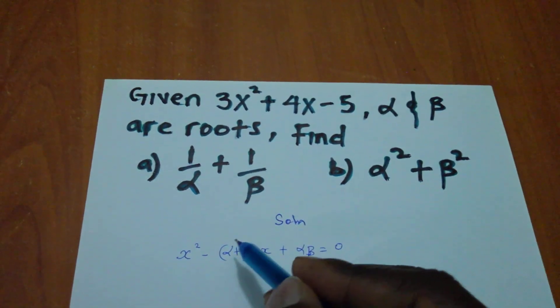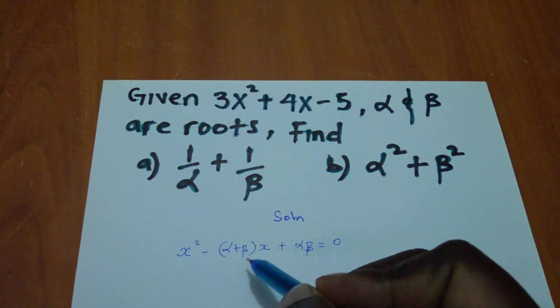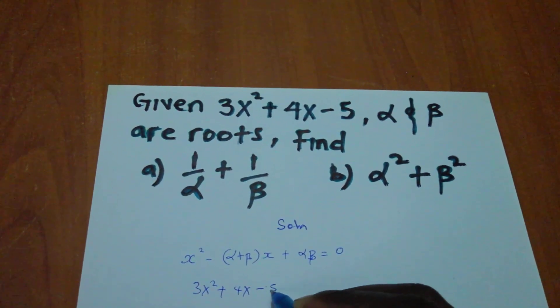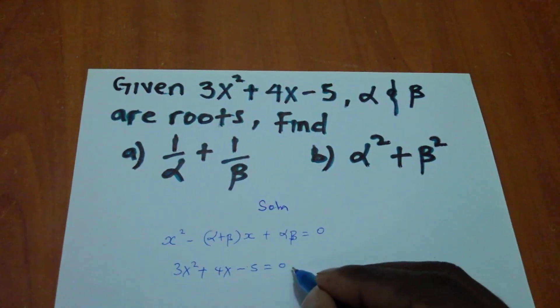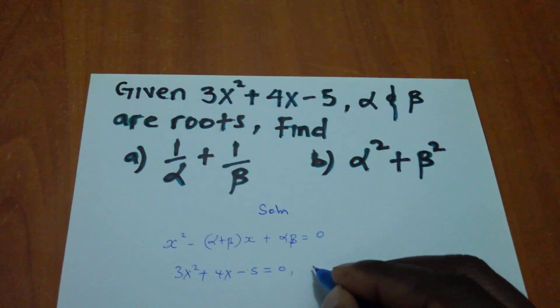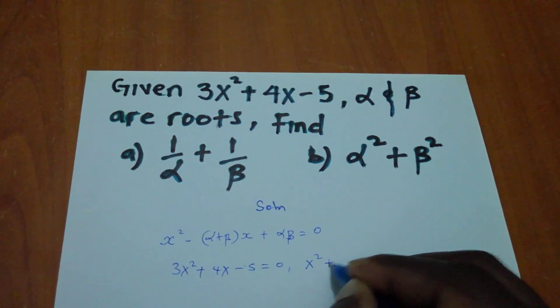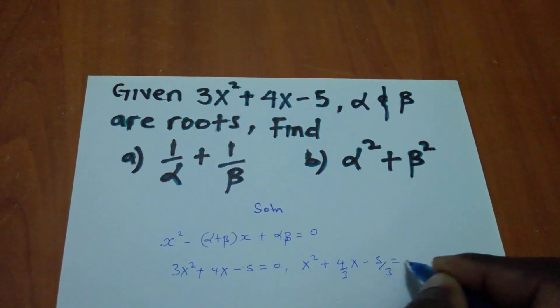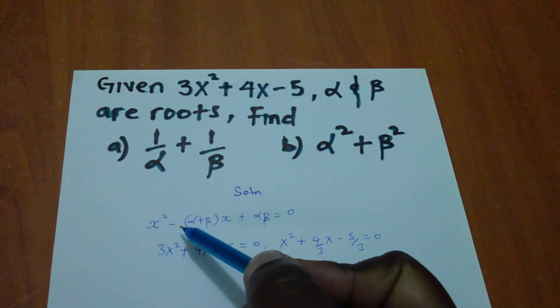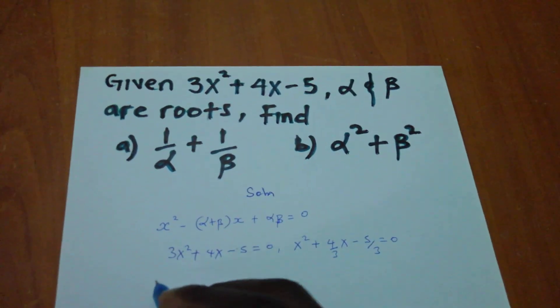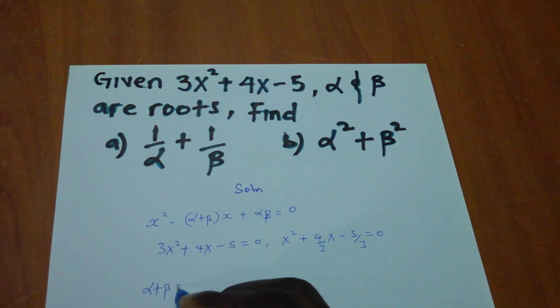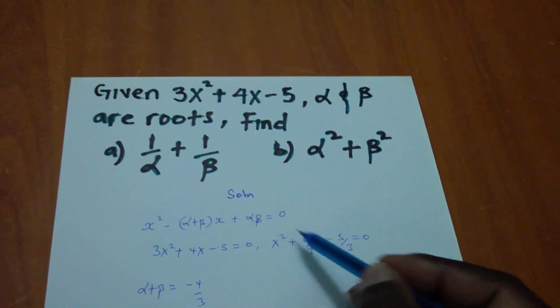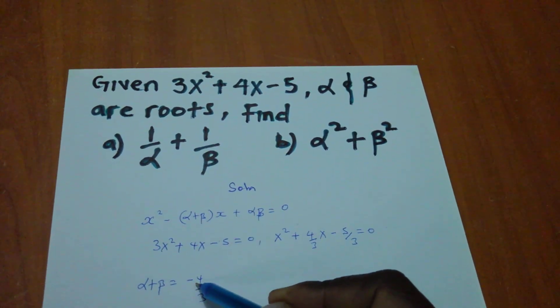If I compare with this original one, remember I have my equation as 3x² + 4x - 5 = 0. So, of which I have to first divide by 3 and I will have x² + 4/3x - 5/3 = 0 to be resembling the original one. Therefore, my sum of the roots, α + β, in here, it will be -4/3. Because if I compare this one through this, my α + β will be -4/3.